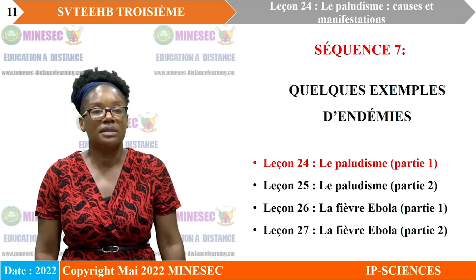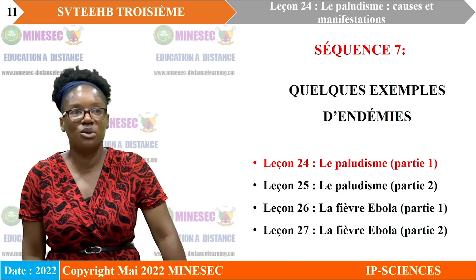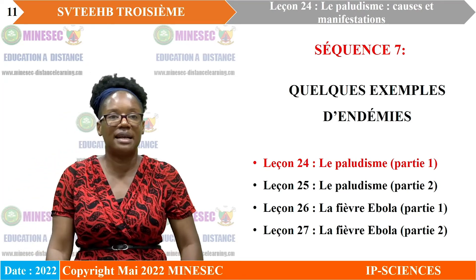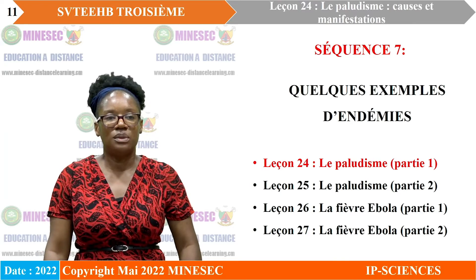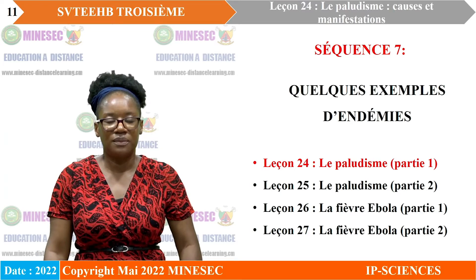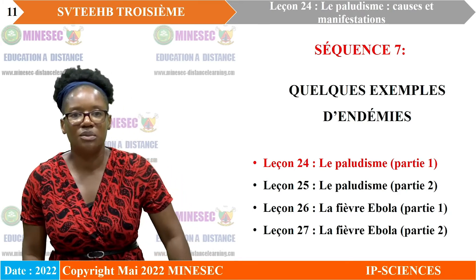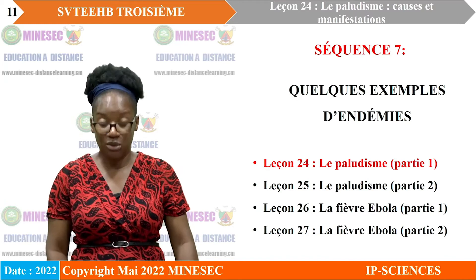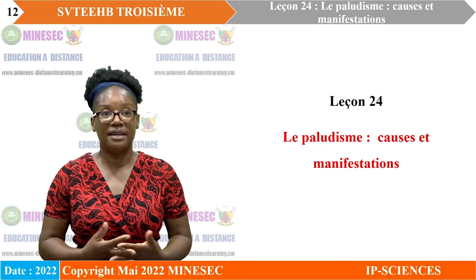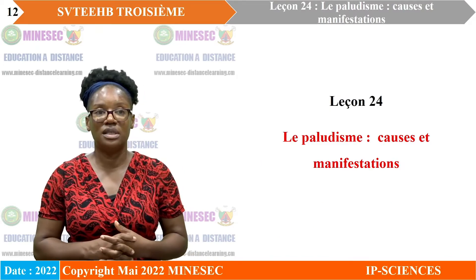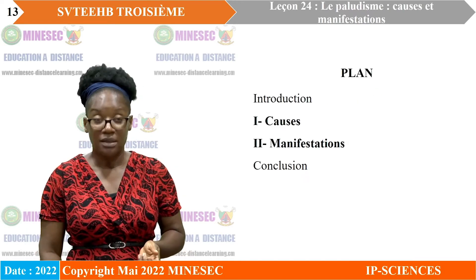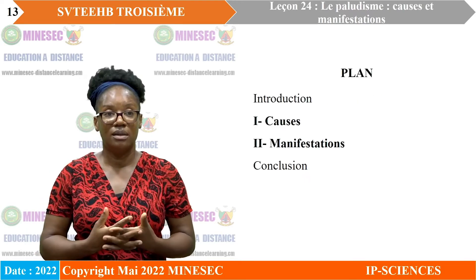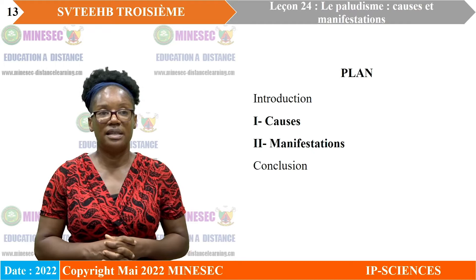Nous allons terminer avec les exercices et commencer une nouvelle séquence ce jour : la séquence 7, qui porte sur quelques exemples de maladies endémiques. Elle comporte quatre leçons. Nous allons commencer avec la première leçon, qui porte sur le paludisme : causes et manifestations. Cette leçon sera présentée suivant le plan qui s'affiche.